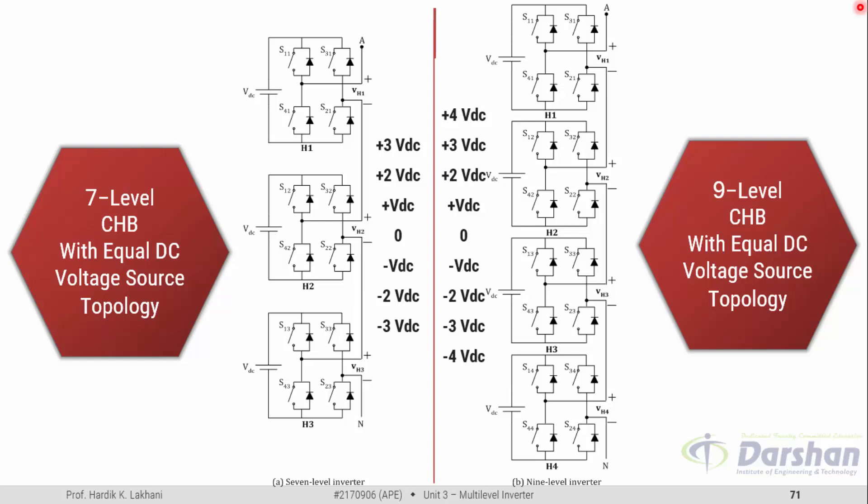In both the seven-level and nine-level CHB with equal DC voltage sources, all the H-bridge units have switches with equal voltage and current ratings. Apart from that, the DC supply applied to each H-bridge cell is equal. Keeping these key points in mind, let us proceed to understand the CHB inverter with unequal DC voltage.